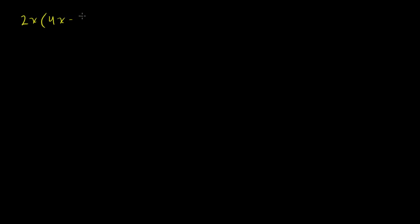Let's say we just want to multiply 2x times 4x minus 5. We just straight up use the distributive property here. When we do all of these polynomial multiplications, all we're doing is the distributive property repeatedly. This is 2x times 4x plus 2x times negative 5 — or minus 5 times 2x. All I did is distribute the 2x.